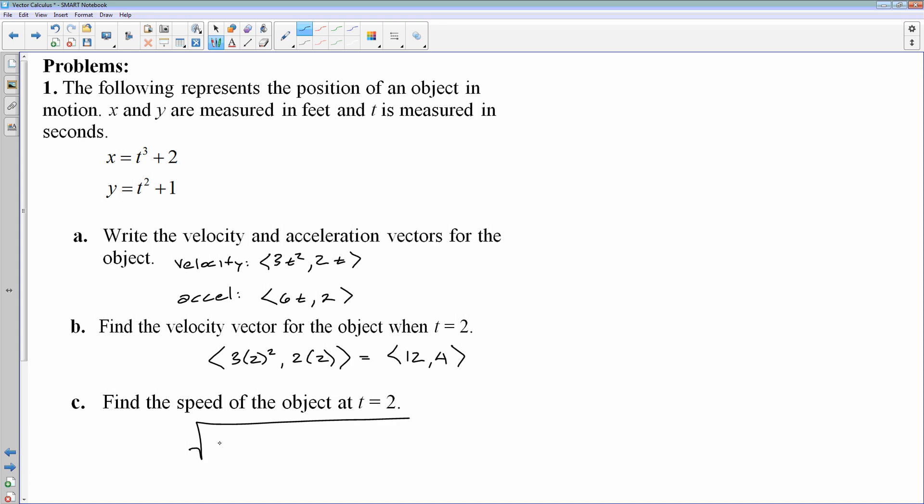That would be 12² + 4². And then we'll clean that up. 12² is 144, 4² is 16. That's going to be the square root of 160. That's 16 times 10. So that would be 4√10. Speed would be measured in the same units as velocity. The only difference is speed does not have direction, whereas velocity would. In this case, it would be feet per second.